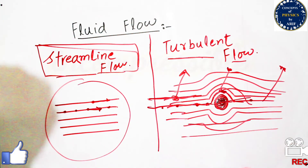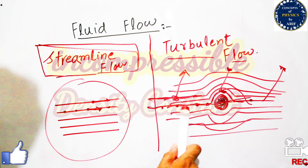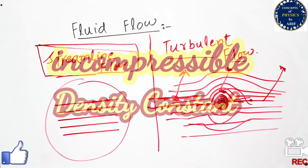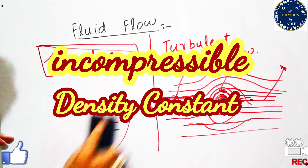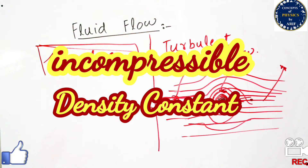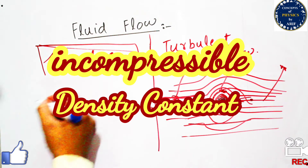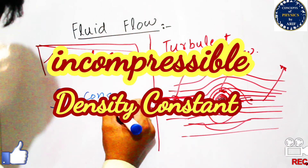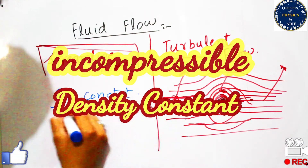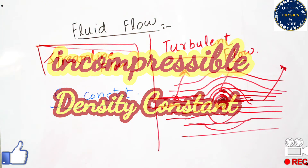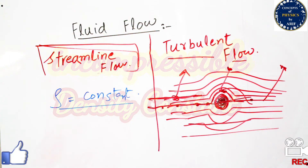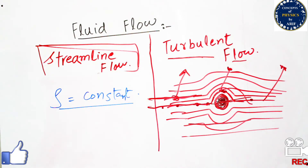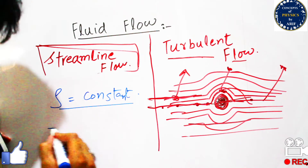We can generalize all flows from this expression. There are three basic attributes of streamline flow. The first attribute is that the fluid should be incompressible — meaning its density is constant, the density of the fluid remains constant. The second attribute is that the fluid should be non-viscous.